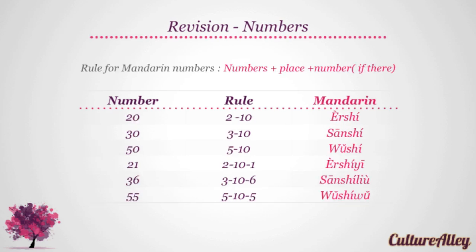Let's take a look at numbers beyond 19. The rule for Mandarin numbers beyond 19 is numbers plus place for numbers ending in zero, and numbers plus place plus number for other numbers. Let's review them once. 20, which is two and ten, translates to er shi. 30, that is three and ten, becomes san shi. 50, or five and ten, becomes wu shi.